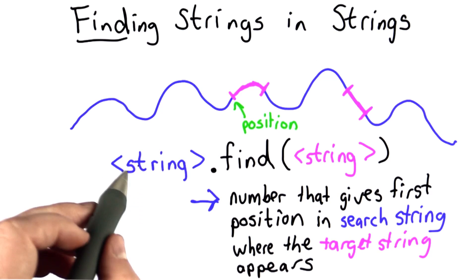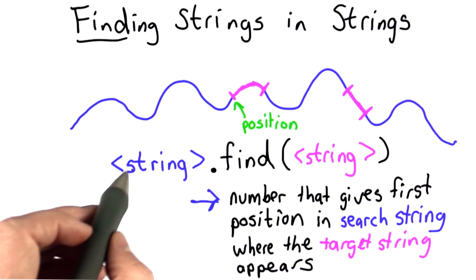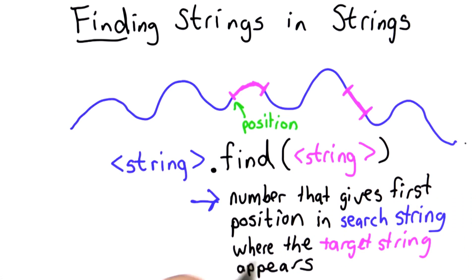So the output of using find will be the first position in the search string, which is this blue string right here, where the target string, which is the purple string, occurs. So that will be a number.